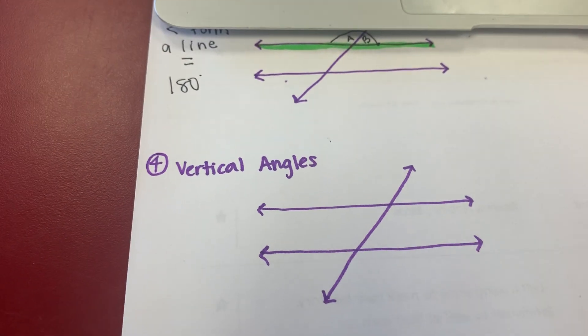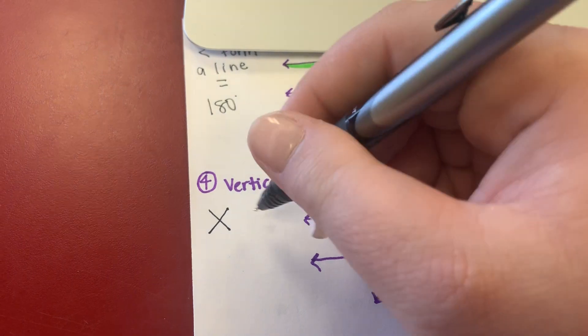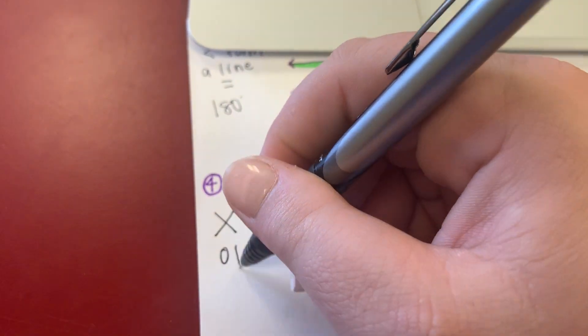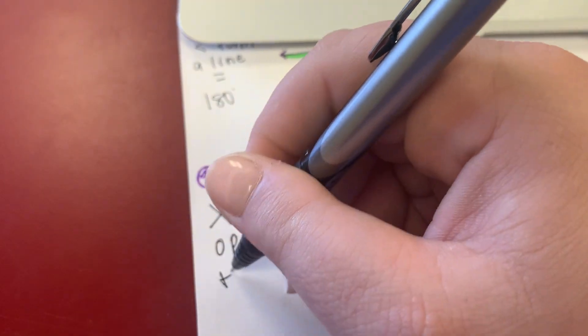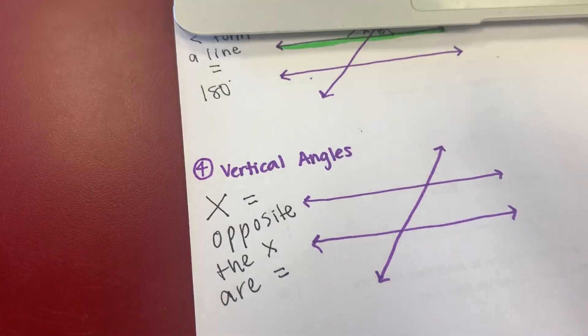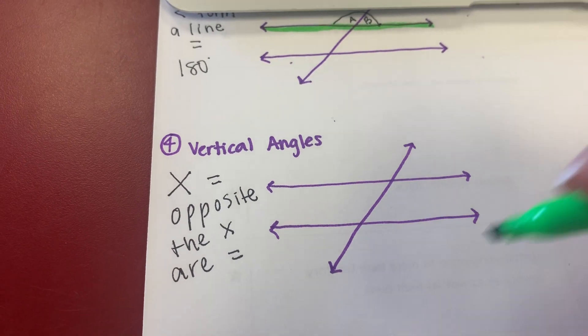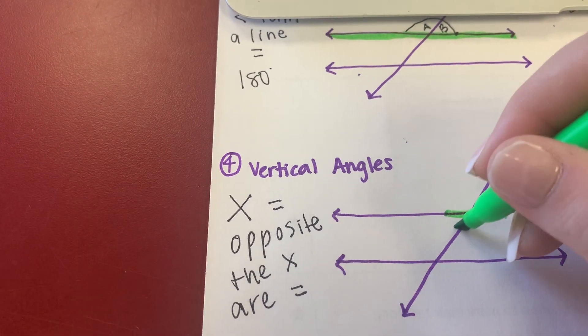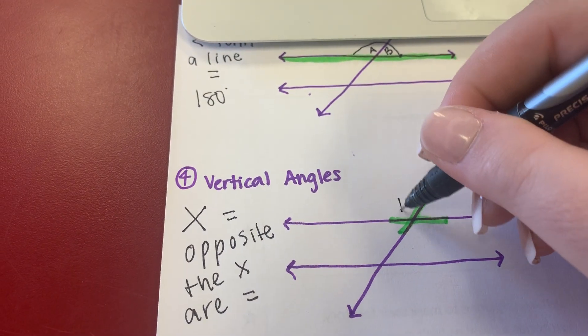Vertical is also something that we learned last year. Vertical is where you're going to have an X. And then things opposite the X are equal. So I'm going to find an X in my thing. There's an X.